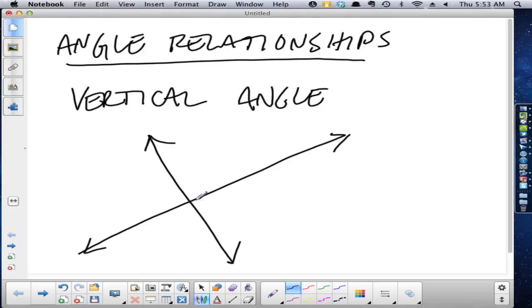We also understand it occurs when two rays, two segments, or any combination of the three occurs. Two pairs of vertical angles are created. The vertical angles are here, so let's be clear.